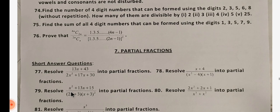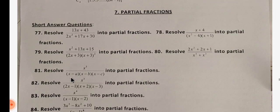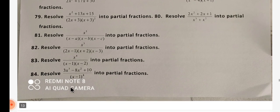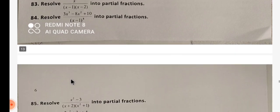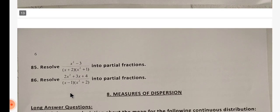Next one is partial fractions. This one is question 77. We will start with 77 and go to 84. Next one is 85, 86. We will cover up to 86.